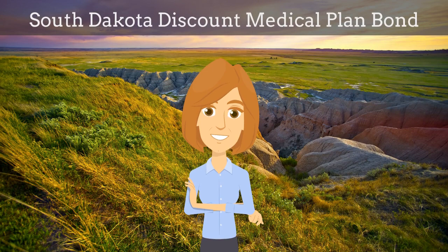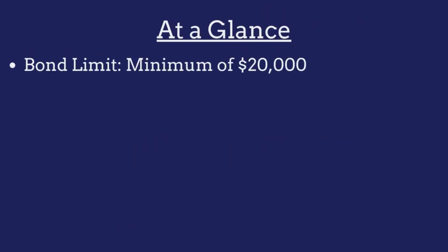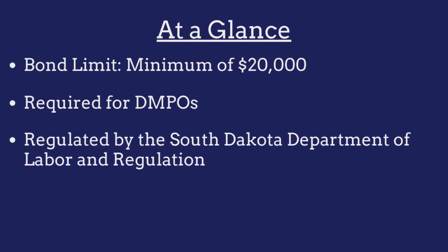In this video, we explain what South Dakota discount medical plan bonds are and how insurance agents can efficiently obtain them for their customers. A discount medical plan bond is a government-required surety bond that protects the public from financial harm if the organization violates the bond's provisions. The limit on the South Dakota discount medical plan organization bond must be a minimum of $20,000. The bond is required for all discount medical plan organizations operating in the state and is regulated by the South Dakota Department of Labor and Regulation.